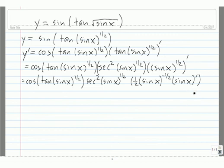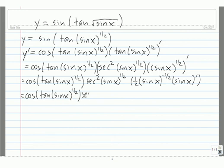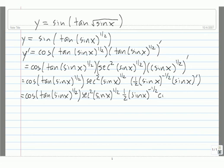Finally we're ready to complete this, because we don't need the derivative of sine of x — it's just a simple trig rule. The derivative of sine of x is equal to cosine x, so we just multiply this by cosine x.